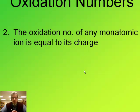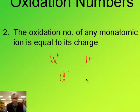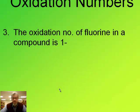The second rule: the oxidation number of any monatomic ion is equal to its charge. So if you had sodium one plus, its oxidation number is also one plus. Or if you had chloride one minus, its oxidation number is also one minus. So oxidation number and charge are the same for monatomic ions.